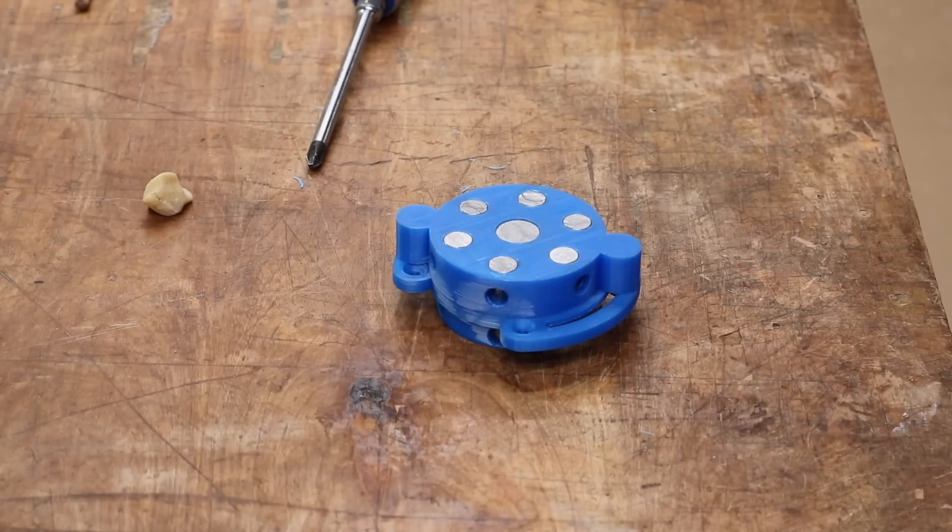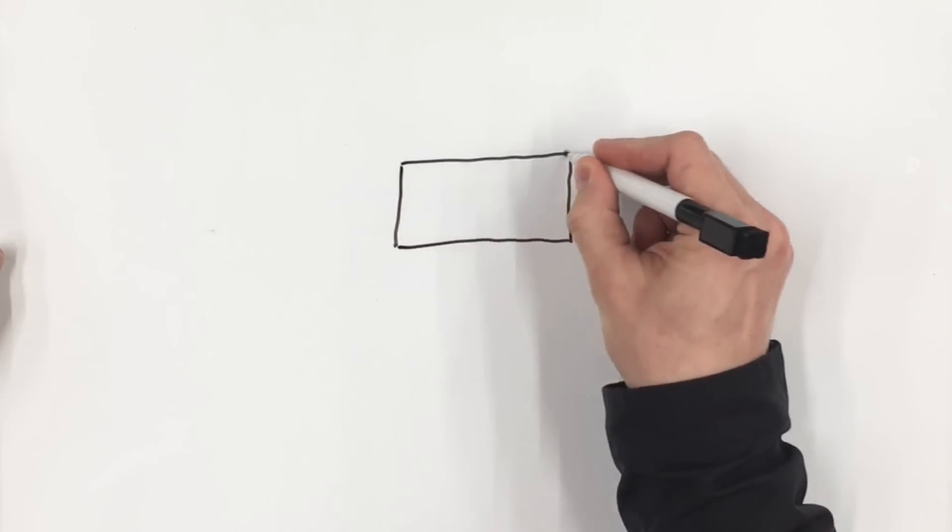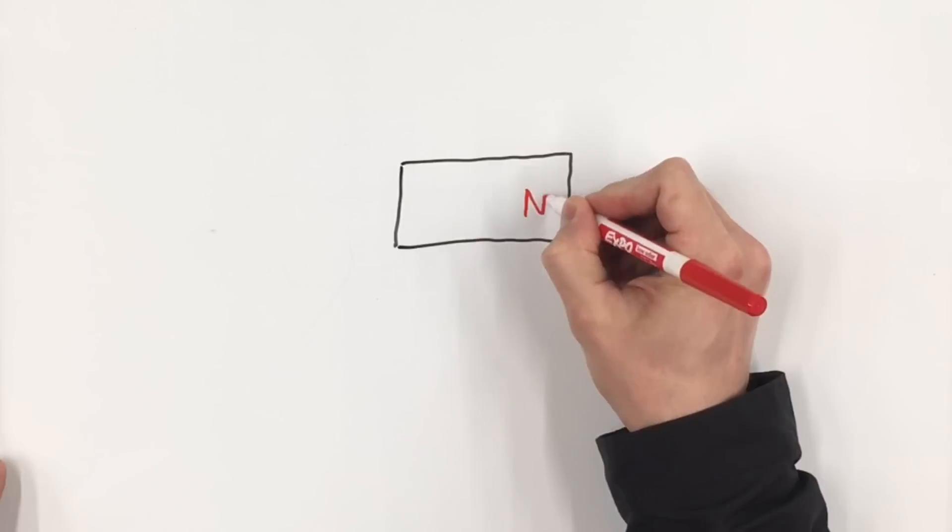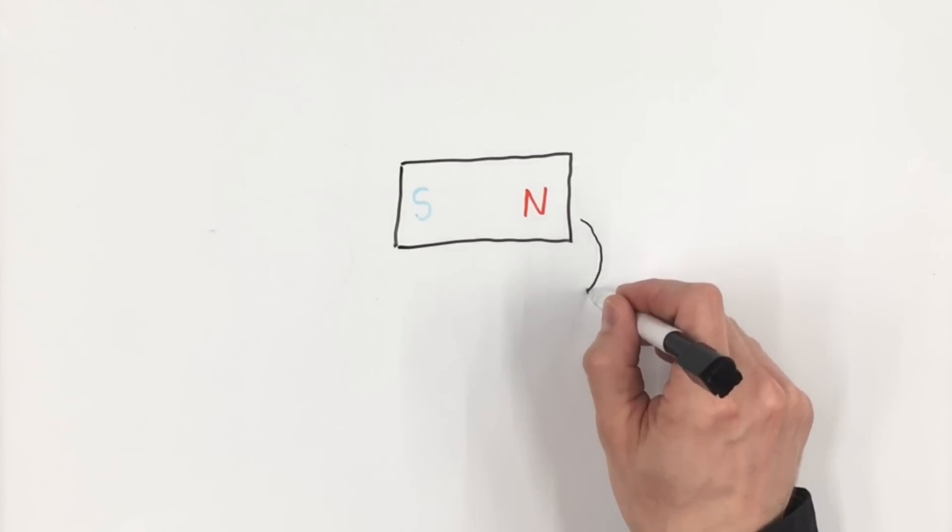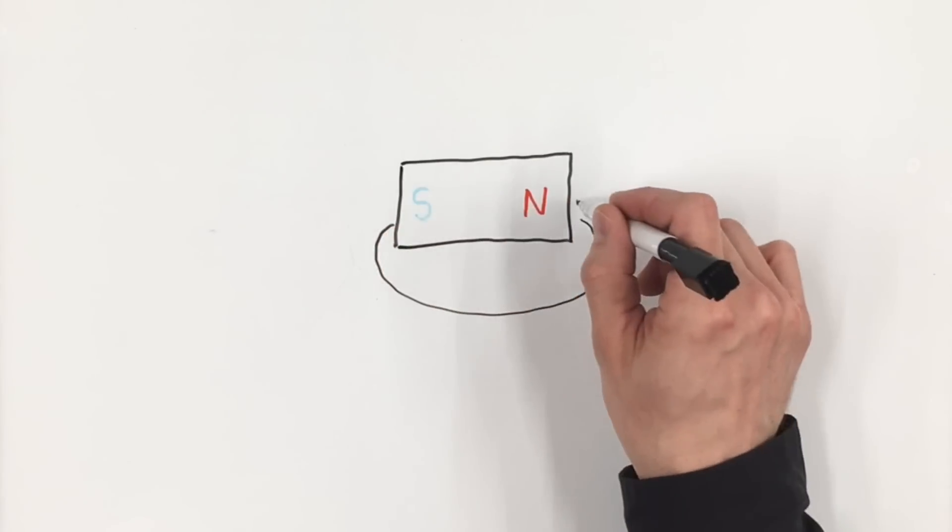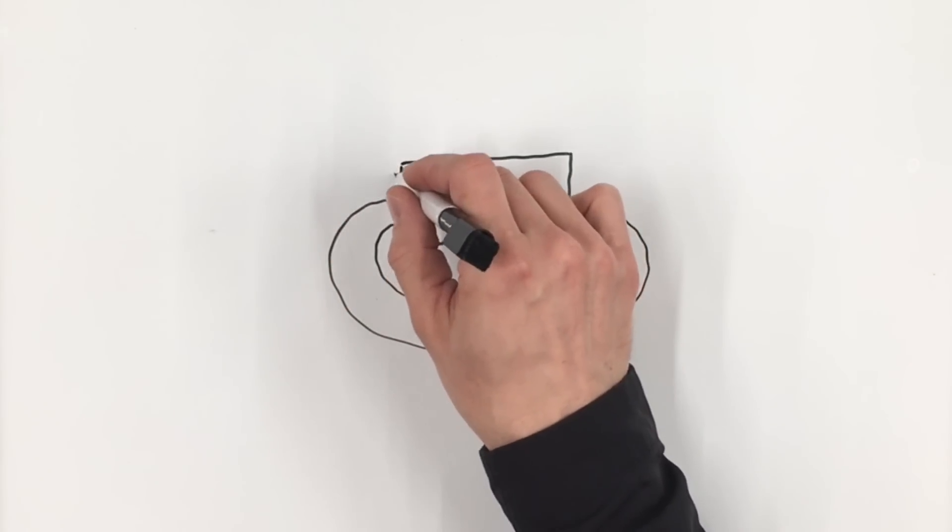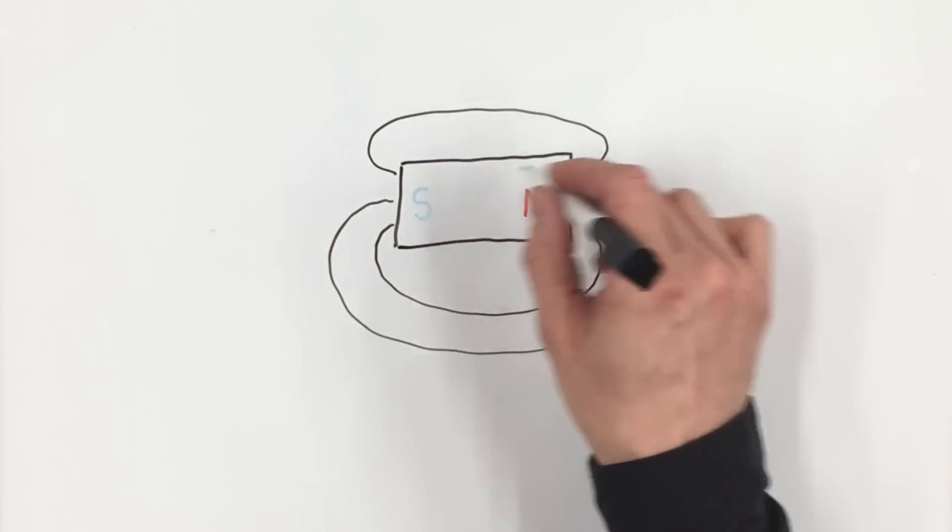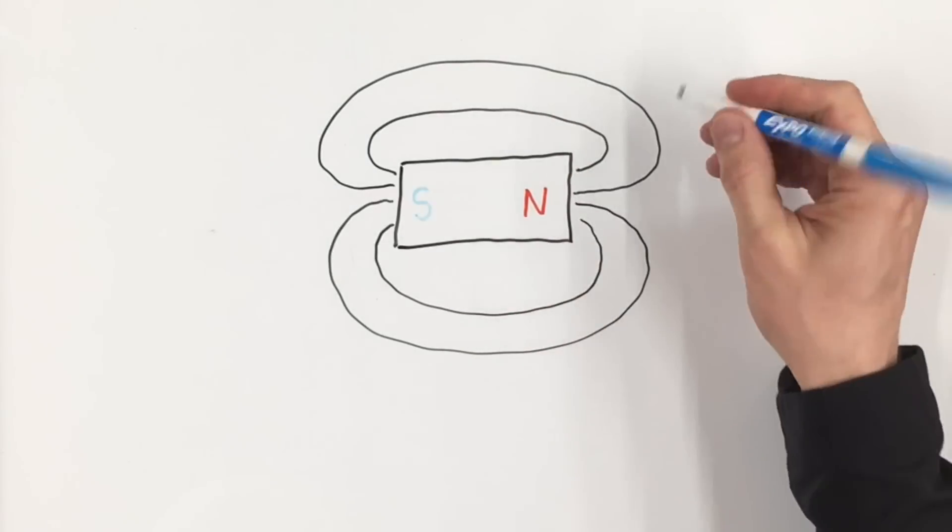And now as promised, an explanation for why this works. And to start that off, here's a bit of oversimplified magnetic theory. So my magnet has a north and a south pole. And these create a magnetic field that can be represented by lines passing from one pole to the other that are not allowed to intersect.